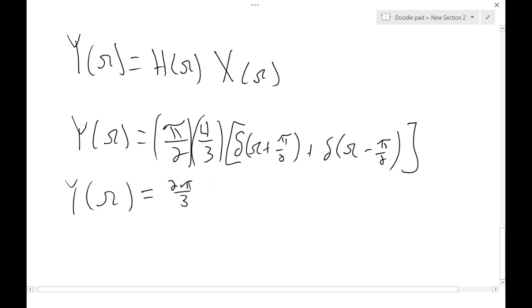But we have already seen this guy once before. We did this whenever we were converting from x of k to x of omega. So we can see that this is just going to be cosine of pi times k divided by 2.